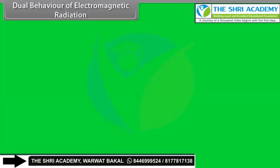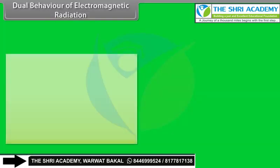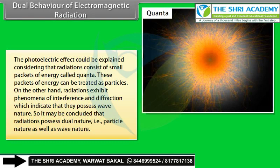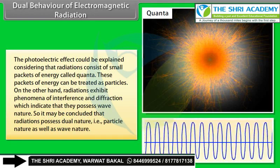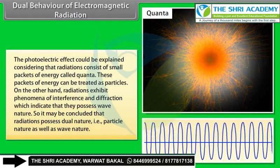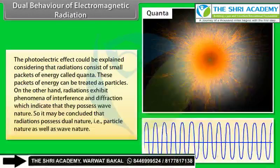Dual behavior of electromagnetic radiation: The photoelectric effect could be explained by treating radiation as small packets of energy (quanta) — particle nature. On the other hand, interference and diffraction indicate wave nature. Therefore, radiation possesses dual nature: both particle nature and wave nature.